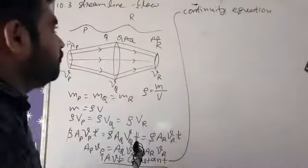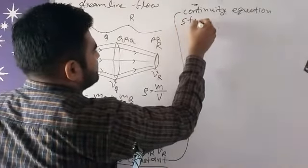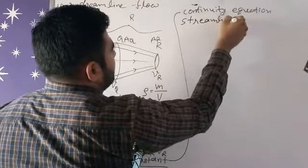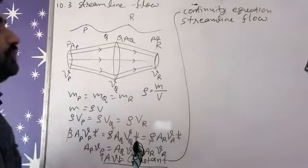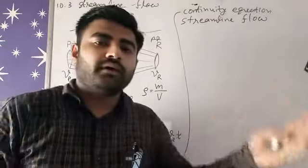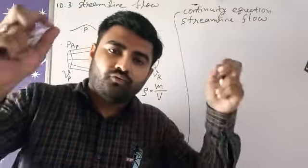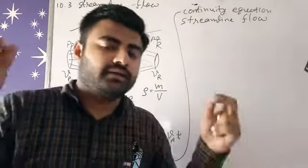So here, velocity is changing according to the point. This type of flow we will call streamline flow. So even though the velocity will be different at each point, at that point the velocity will remain constant.